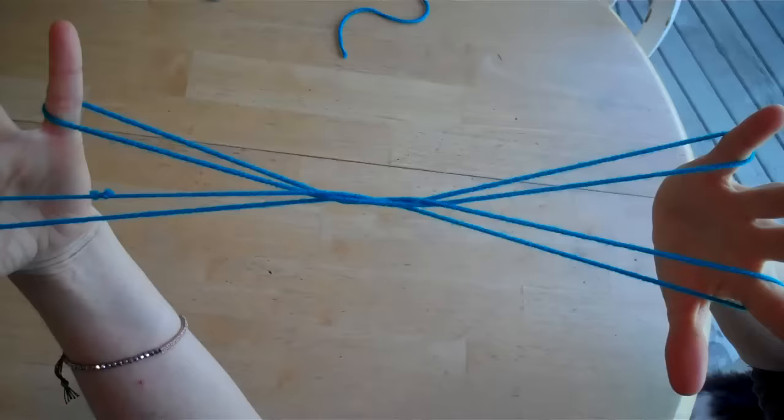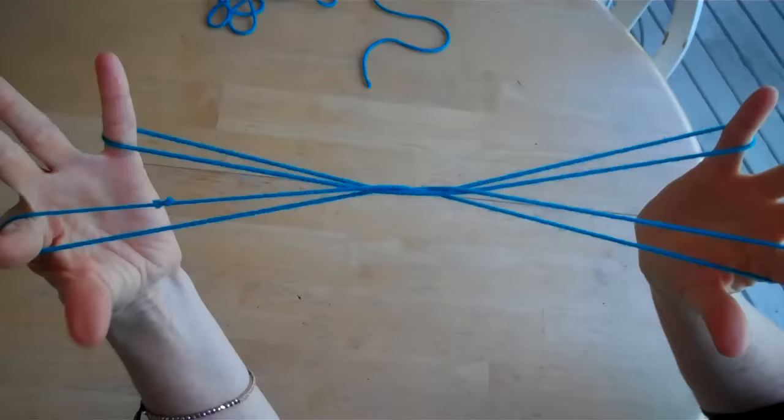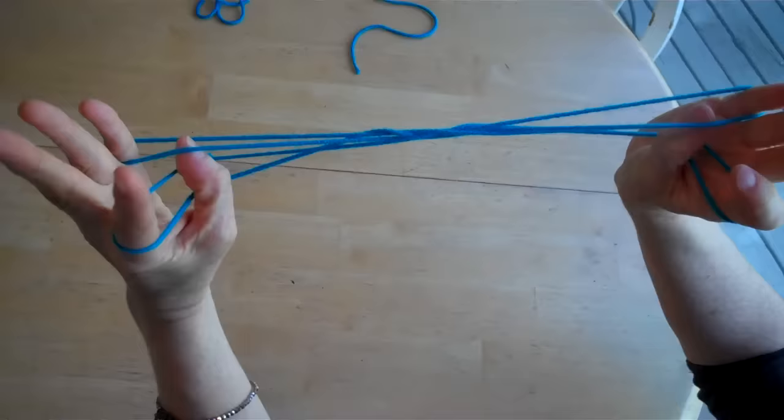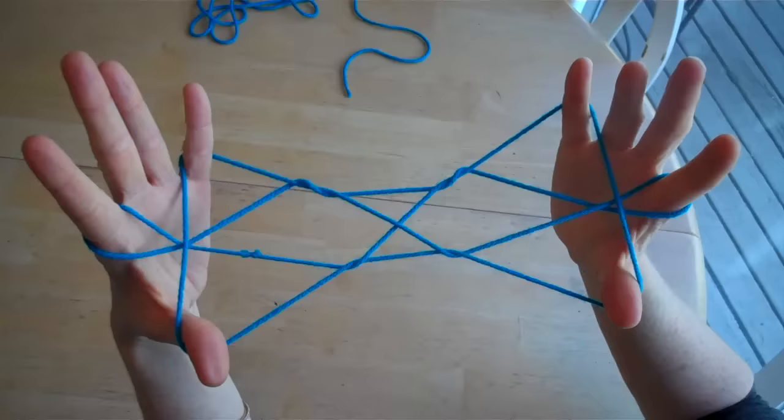Keep going, we'll get there. With your thumbs, go over the first two strings of the cat whiskers and pick up the third one. Try not to pull too tight. You want a little tension but not too tight.